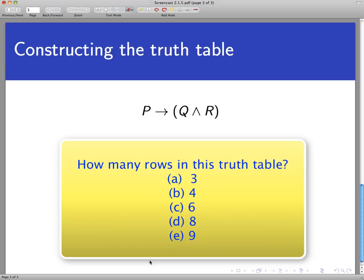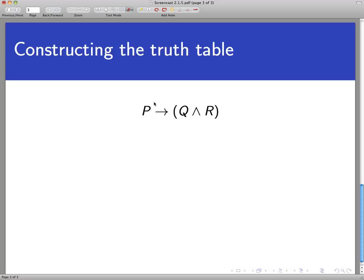The answer is there are going to be eight rows. Why is that? Each of the three sentences involved here has two states, either true or false. One, two, three statements, and there are two states each. So I could have one of two possibilities for P, true or false, one of two possibilities for Q, true or false, and one of two possibilities for R, true or false. So the number of possible combinations is the product of those, two times two times two, that's eight.